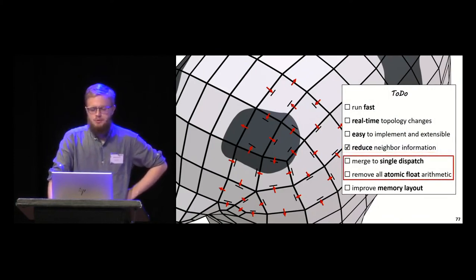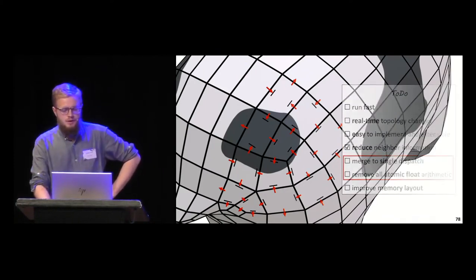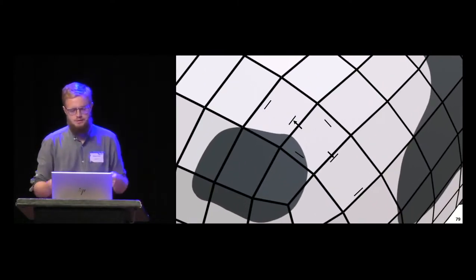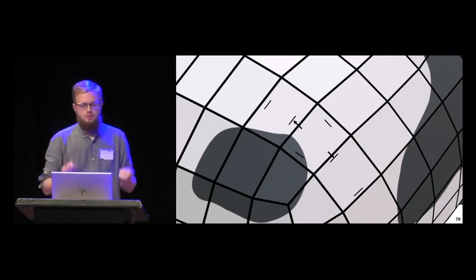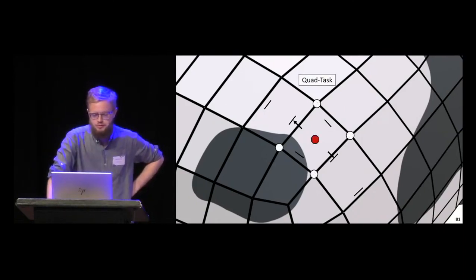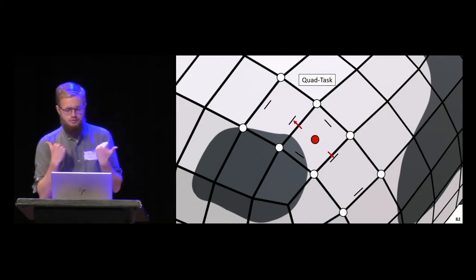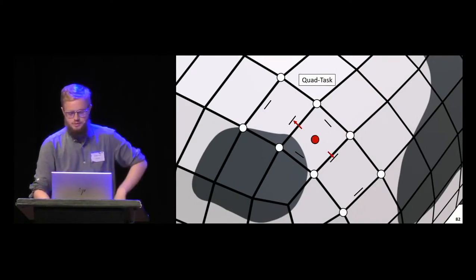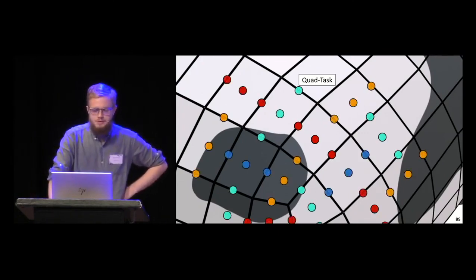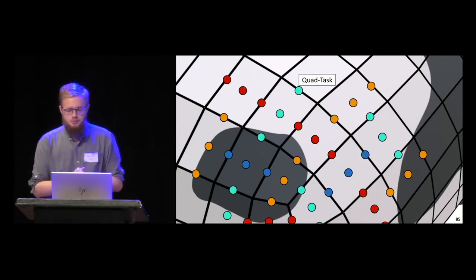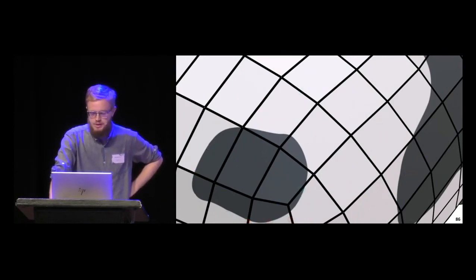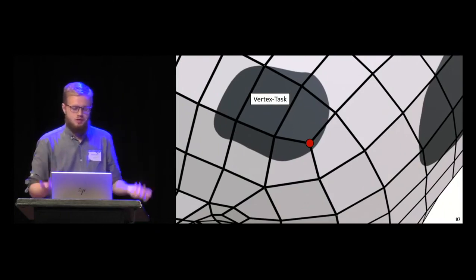Let's talk about how we subdivide our data structure. Essentially we split our subdivision into two tasks: the vertex task and the quad task. This is the quad task. We spawn a thread per quad, then compute a face point, pretty straightforward. Then we use the two edge friend references to compute two edge points. If we do this for all the quads, we can see that all edge points are computed by someone, none are missing. This concludes the quad task - we've successfully computed the edge points and the face point.